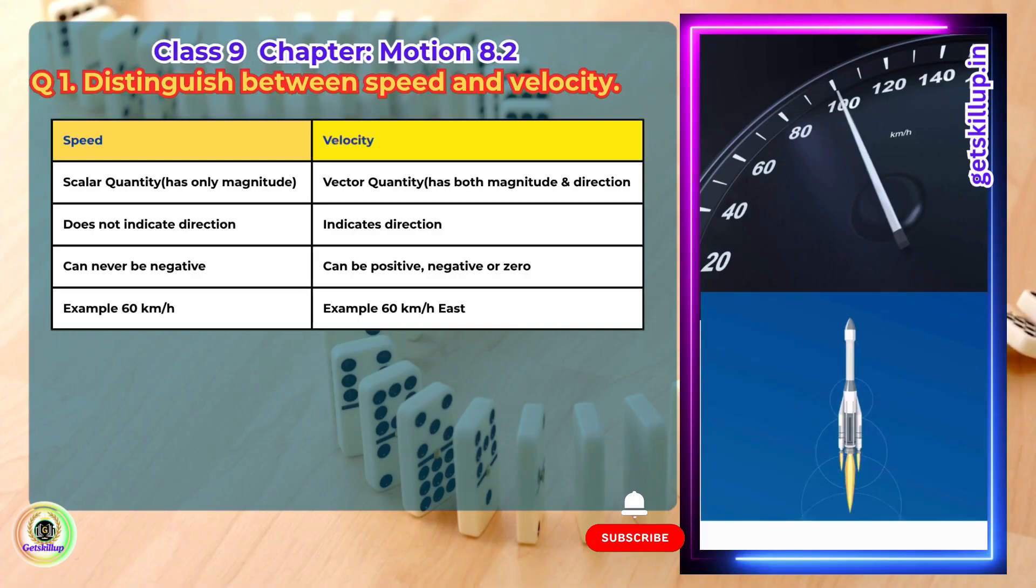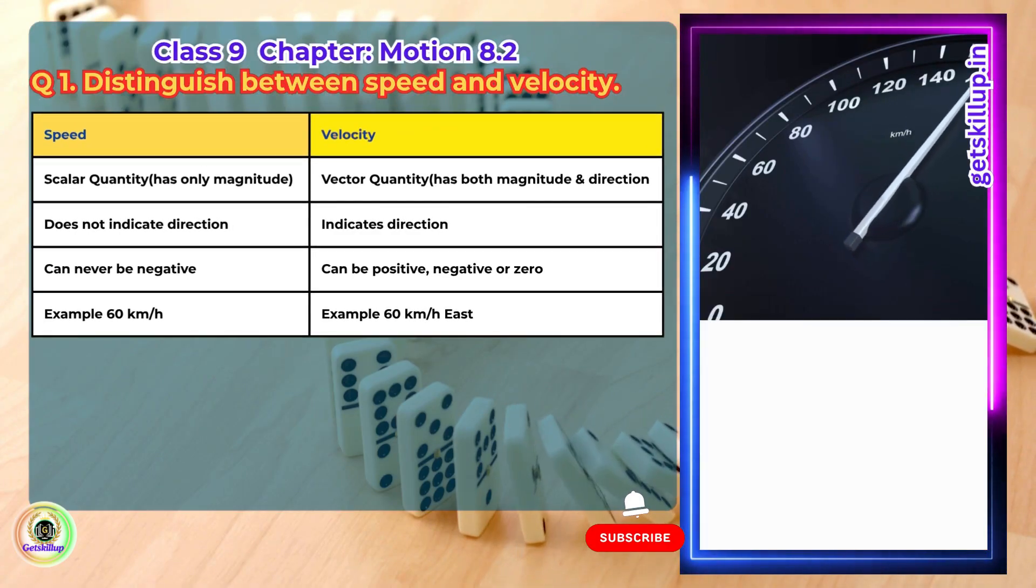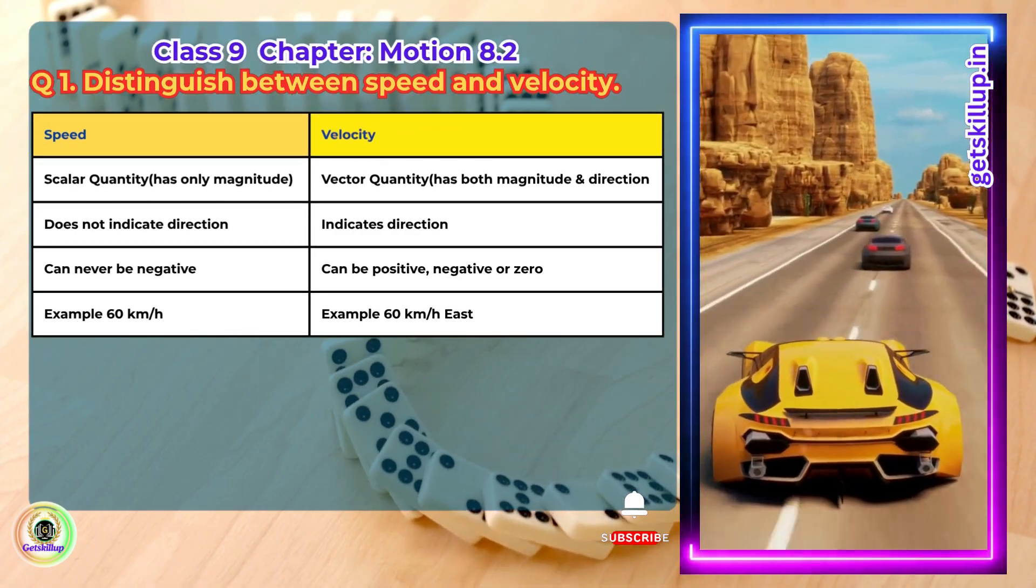Speed is scalar quantity, has only magnitude. Velocity is vector quantity, has both magnitude and direction.